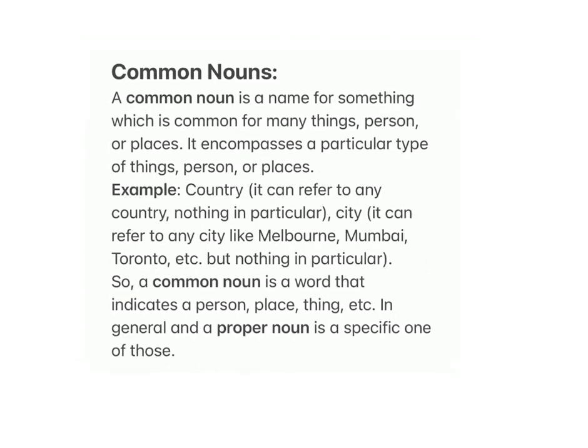Australia — there is no other country named Australia; this name is fixed for only one country. Common nouns: A common noun is a name for something which is common for many things, persons or places. It encompasses a particular type of things, persons or places. Example: 'country' can refer to any country, 'city' can refer to any city like Melbourne, Mumbai, Toronto, etc., but nothing in particular.